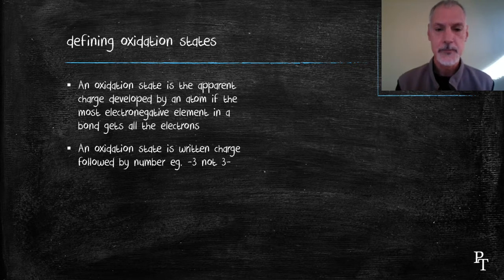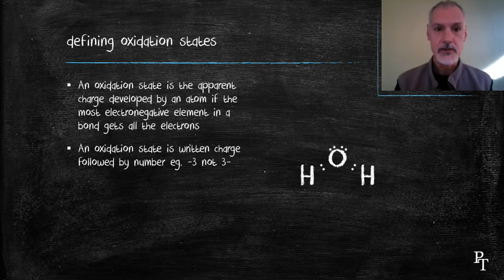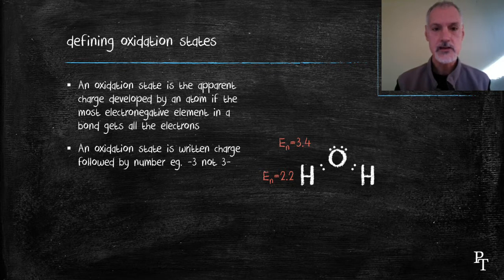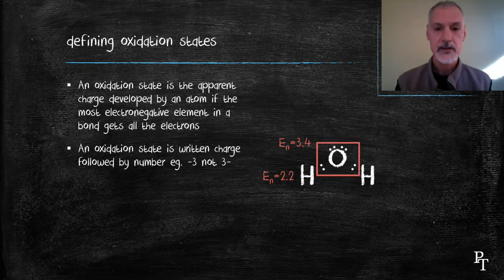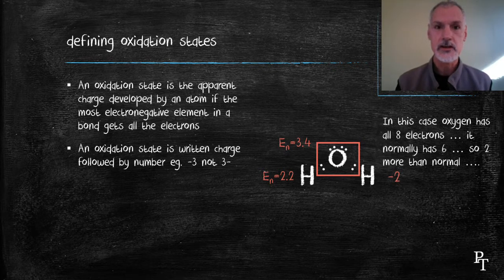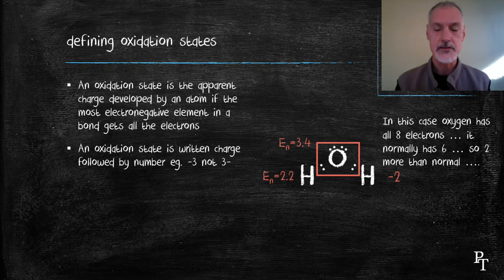Let's look at water for an example. We can look at the electronegativities of the two elements involved, oxygen and hydrogen. Oxygen has a bigger electronegativity, and as a result, it captures not only its own electrons but hydrogen's as well. I've drawn a rectangle around those electrons. So it has eight electrons. Normally from its position, oxygen should only possess six. As a result, it has two more than it normally should, and hence an oxidation state of minus two.